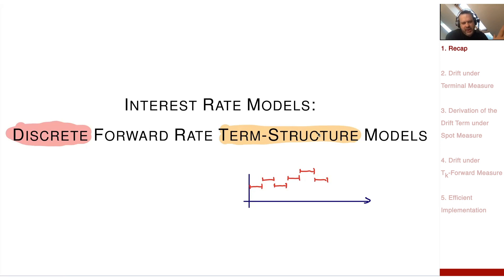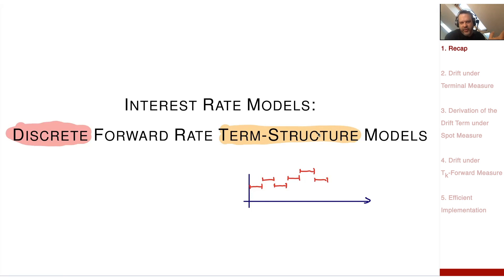This is now the third phase, where I specify a model so general that we derive a numerical implementation — for example, a Monte Carlo simulation using an Euler scheme within an 80-dimensional space — that allows us to value all kinds of products. We can also value the caplet, so we can compare this numerical implementation to an analytic formula, or calibrate the numerical implementation to match some analytic valuation. That's the third phase: having a big general model.